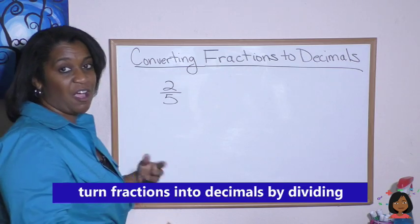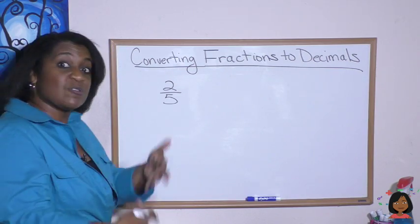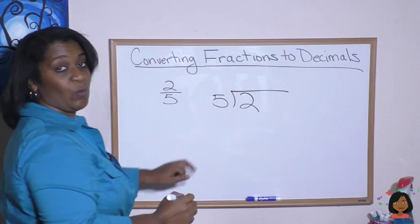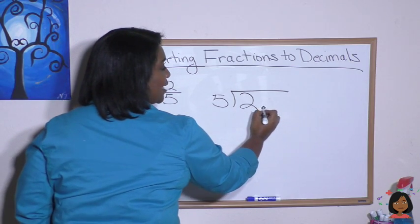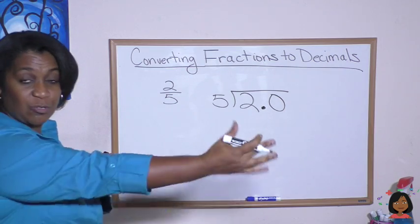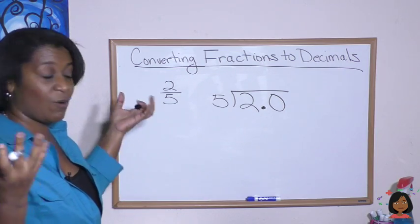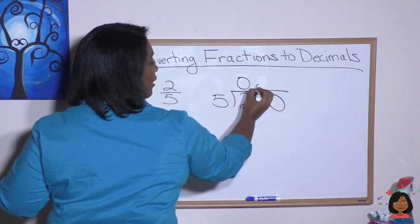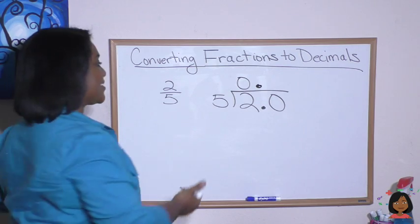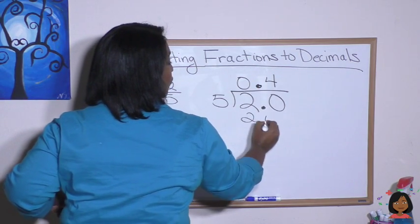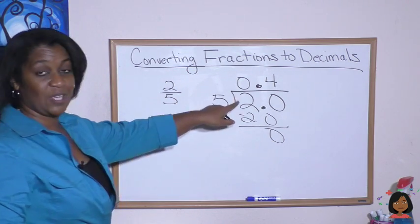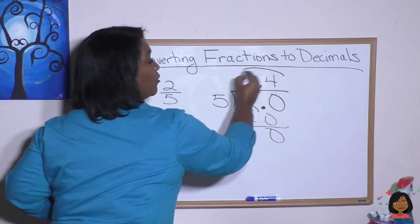Remember, two is our dividend, five is our divisor, so let's divide. Five into two — five can't go into two, so we're going to put a decimal point here and a zero. We can always put a decimal and continue to add zeros until we end up with a whole number. Five can't go into two, but can it go into 20? Yes, it can go into 20 four times. Five times four is 20, and we end up with a zero. That means the decimal for two-fifths equals 0.4, or four-tenths.